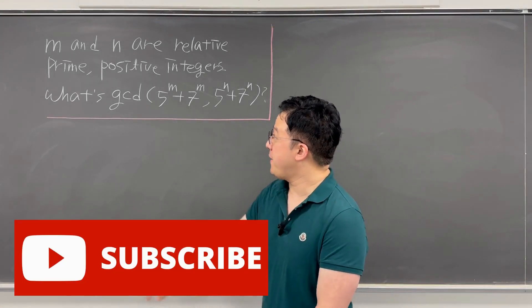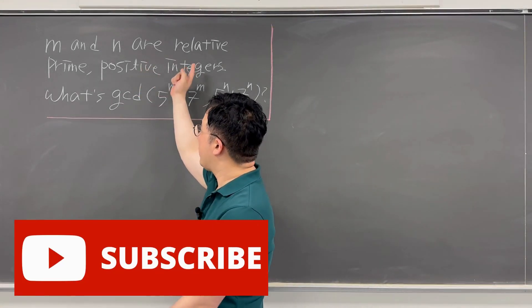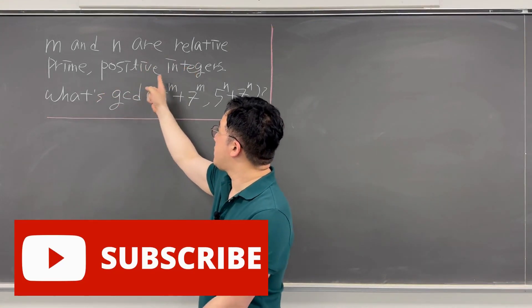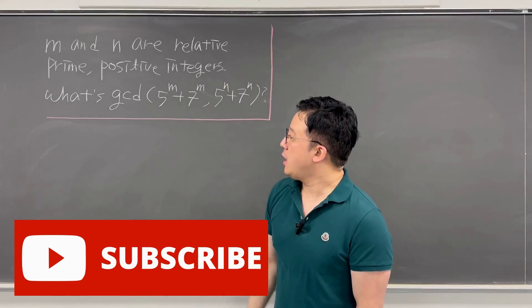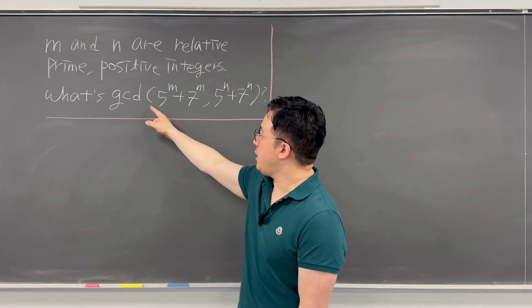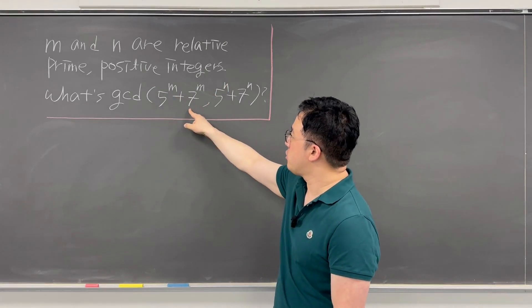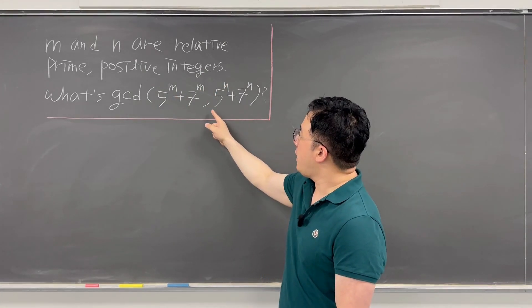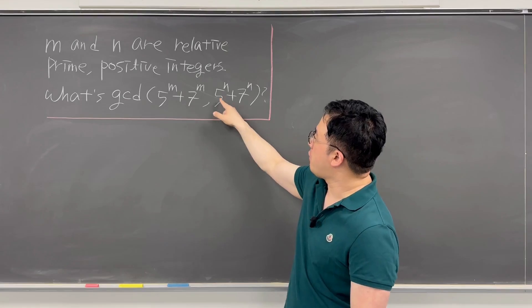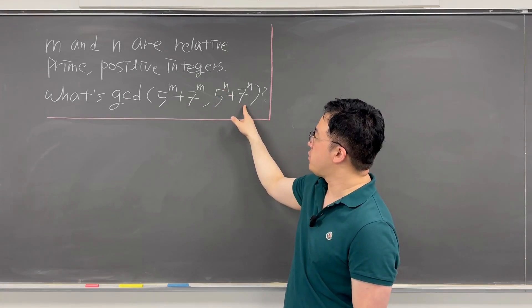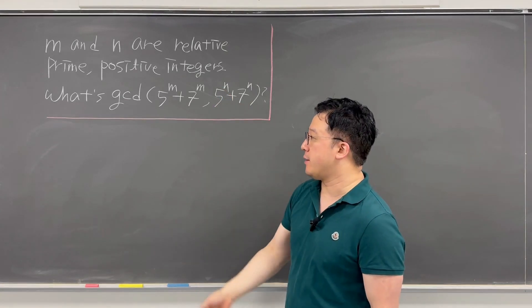Here's the question. If M and N are relatively prime positive integers, what is the GCD of 5 to the power of M plus 7 to the power of M, and 5 to the power of N plus 7 to the power of N?